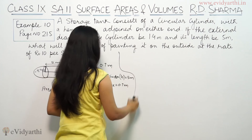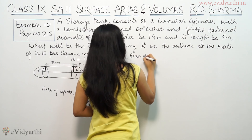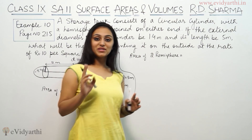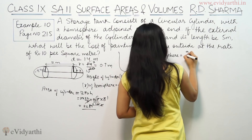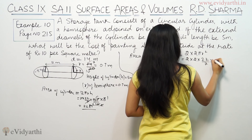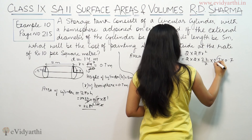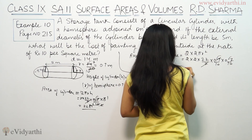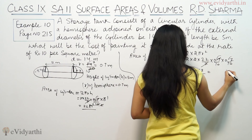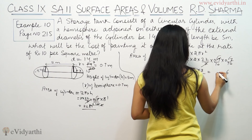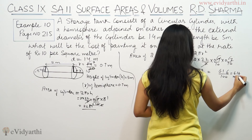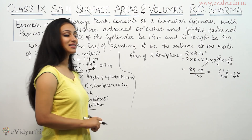Now let's calculate the area of 2 hemispheres. Area of 2 hemispheres equals 2 × 2πR². So, 2 × 2 × (22/7) × 0.7 × 0.7. The 7s cancel, leaving 4 × 22 × 0.7 divided by 10, which is 88 × 7 by 100. That gives 616 divided by 100, which equals 6.16 square meters.